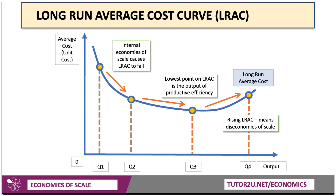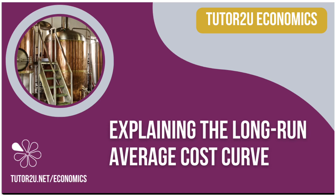Here's a quick diagram showing that. A long-run average cost curve — when it's falling, you have economies of scale. The lowest point, minimum efficient scale, is also the output of productive efficiency. But if average cost starts to rise in the long run — for example, between Q3 and Q4 — then there are diseconomies of scale.